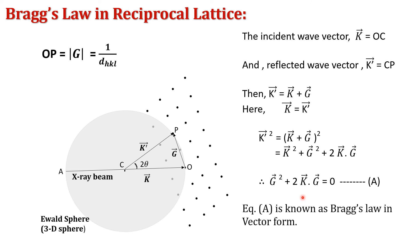Earlier we found Bragg's law using X-ray diffraction by crystal planes. In that geometry, AP is exactly parallel to the set of parallel planes, and the Bragg relation gives sin θ = (1/d_hkl) / (2/λ), where 2/λ is the diameter of the circle and the radius equals 1/λ. Therefore sin θ = OP/AO = (1/d) / (2/λ), satisfying the Bragg relation.